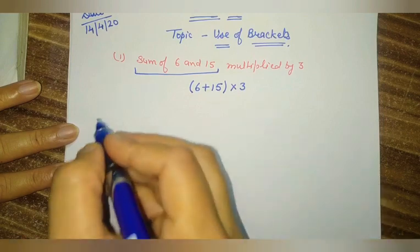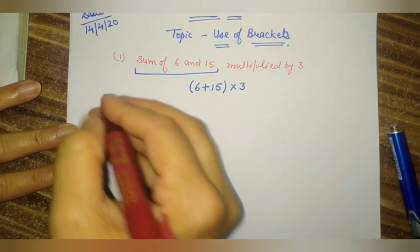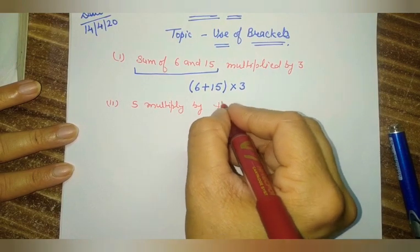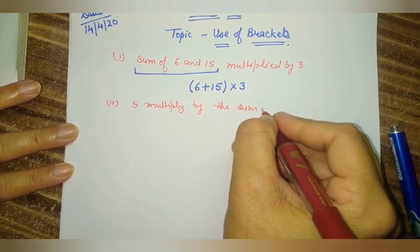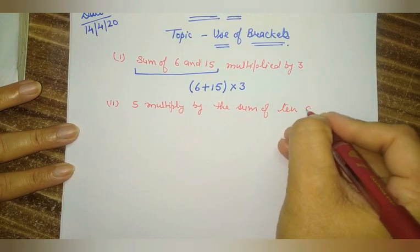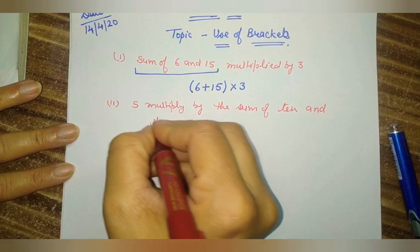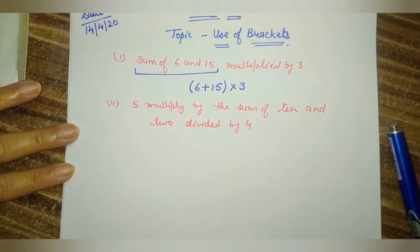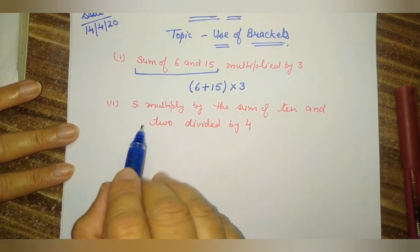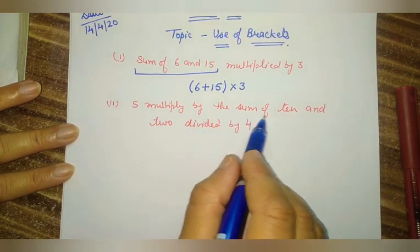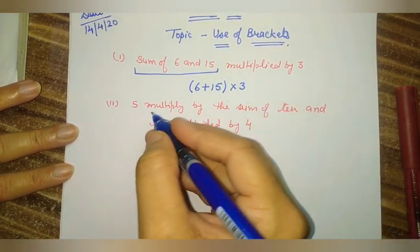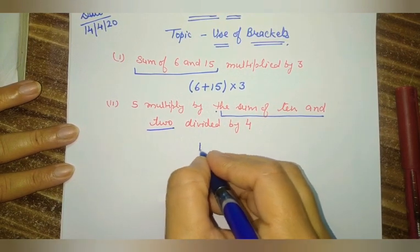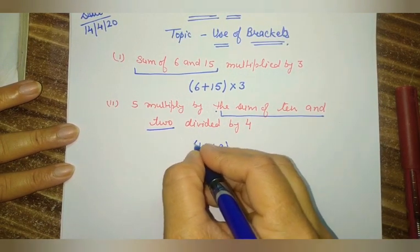Now one more example. That example is: 5 multiplied by 5 multiplied by 5 multiplied by the sum of 10 and 2, divided by 4. Now try to understand this statement: 5 multiplied by the sum of 10 and 2. So first, what we have to do is the sum of 10 and 2. We have written the sum of 10 and 2 here, and that we bound with the bracket — we use a small bracket.